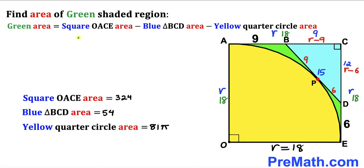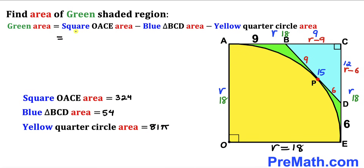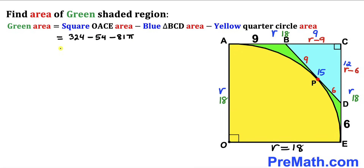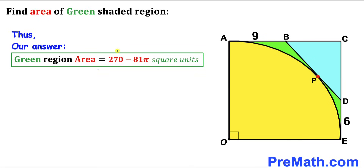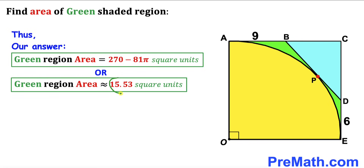Now we calculate the green shaded region: area of square minus area of triangle minus area of quarter circle = 324 − 54 − 81π = 270 − 81π square units, which is approximately 15.53 square units.